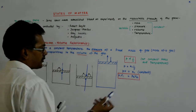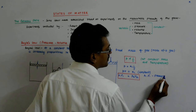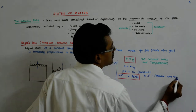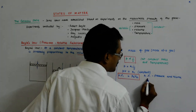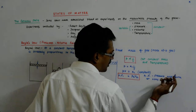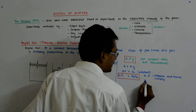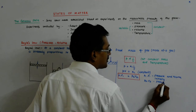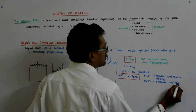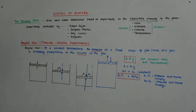So p1 and v1 is pressure and volume at some point — the initial values — and p2 v2 is the final pressure and volume. Now it's an interesting exercise to plot p versus v.